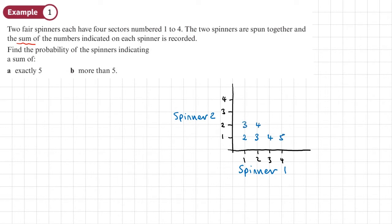So now we can answer this question. Part a: probability that they've got exactly five. There's one, two, three, four of those out of 16, so four over 16. We don't need to simplify it, but if we did it would be a quarter.